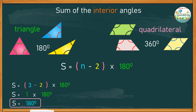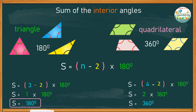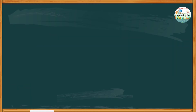Using the same formula, let's find the sum of the interior angles of any quadrilateral. S represents the sum of the interior angles. Quadrilaterals have 4 sides, subtract 2, and then multiply the remaining number by 180 degrees. So S equals 4 minus 2, giving us 2, multiplied by 180.